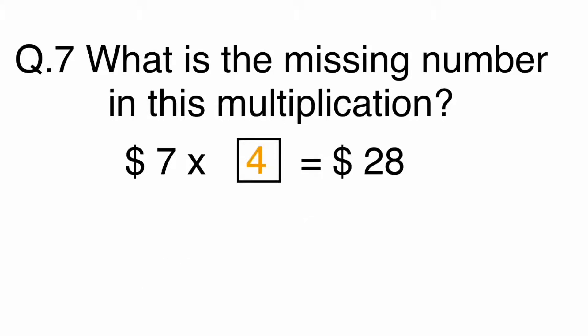Seven times four equals twenty-eight. Or do twenty-eight divided by seven, which equals four. The answer is B. Four.